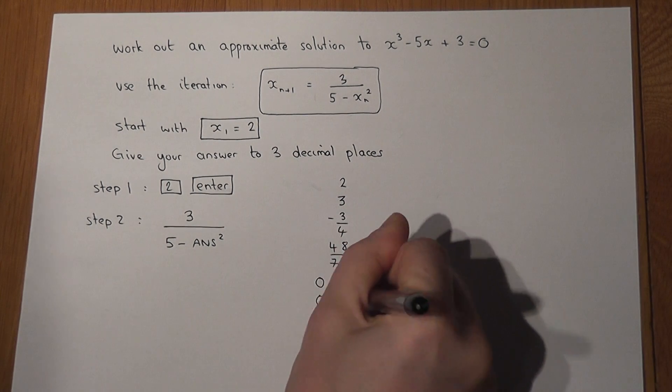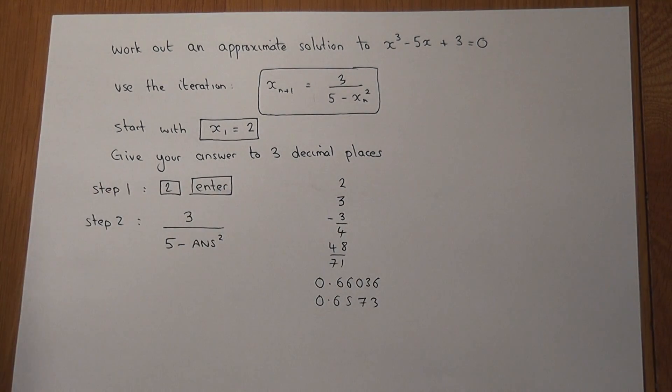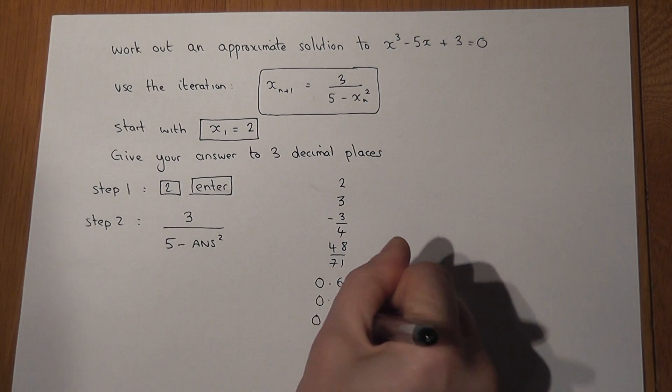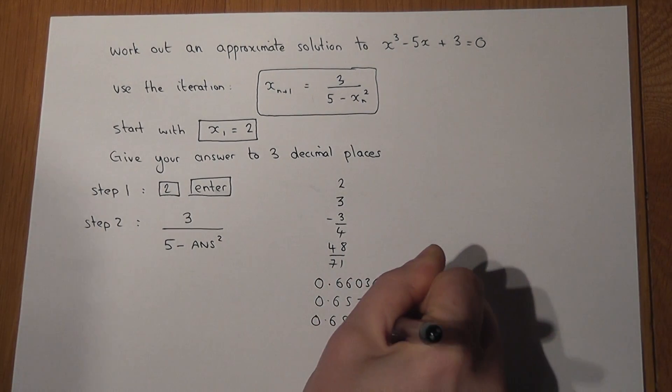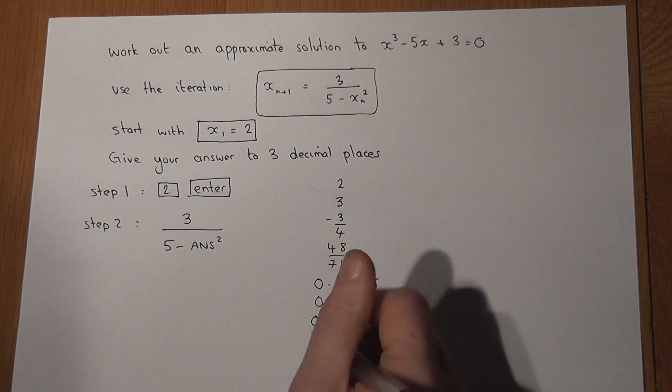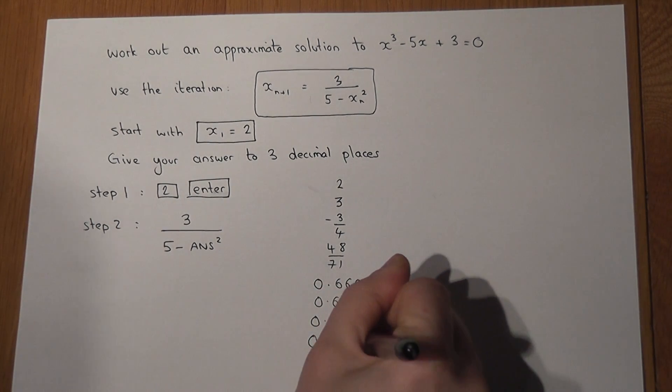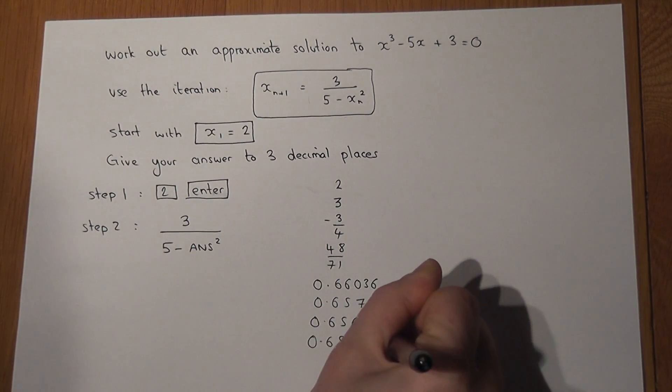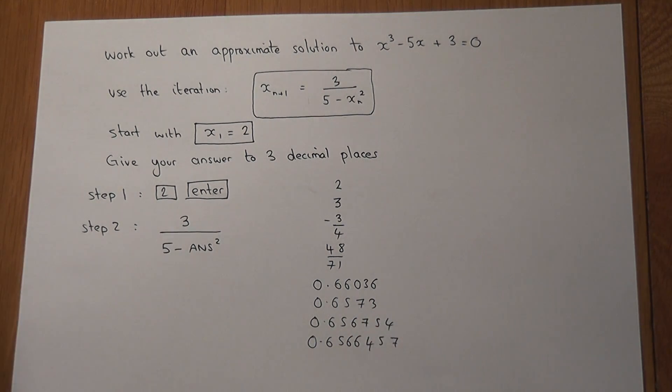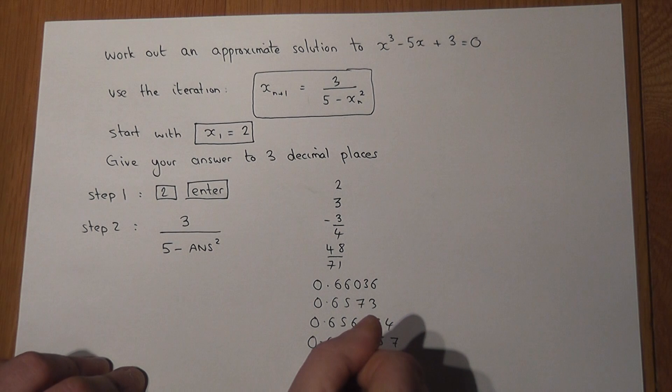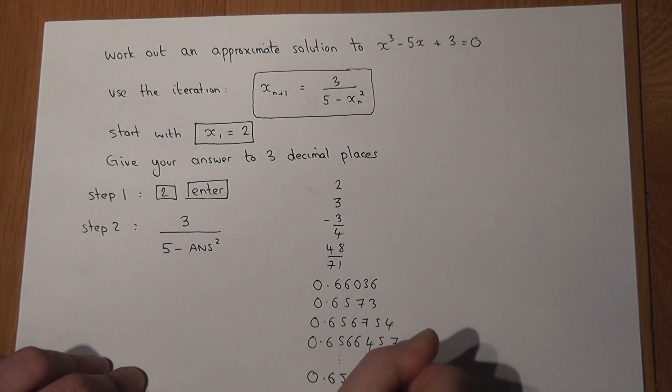What happens very quickly is that these numbers stop changing and get stuck at a certain value. When you get to this point where they've stopped changing and you press enter over and over again, then that value which you get to is called the solution to the equation.